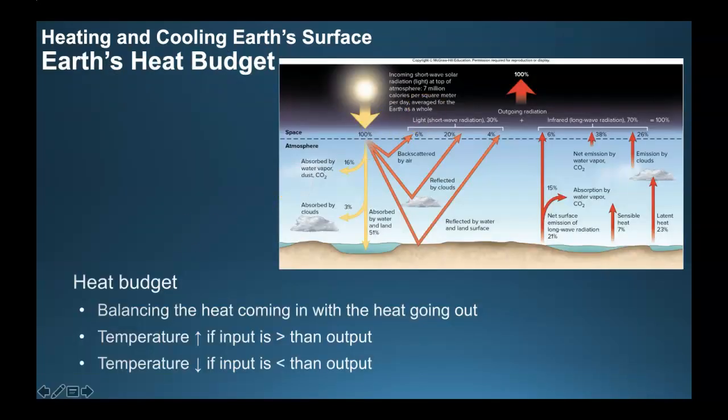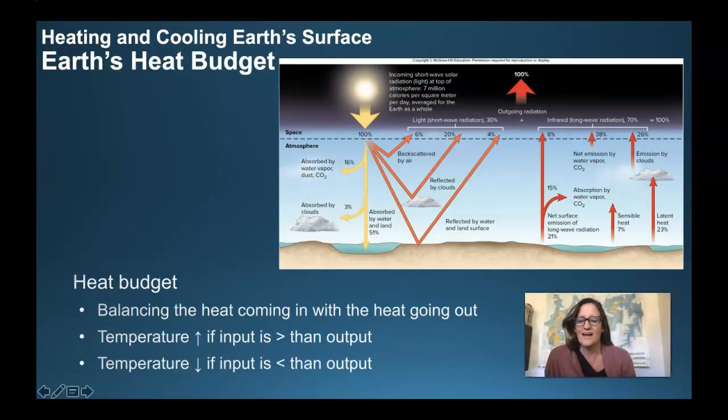There is heat coming into the Earth and there is heat radiated back out of the Earth. Here's the big bright sun bringing in 100 percent of the rays to the Earth. Some of that sunlight radiation is going to be absorbed by atmospheric gases.